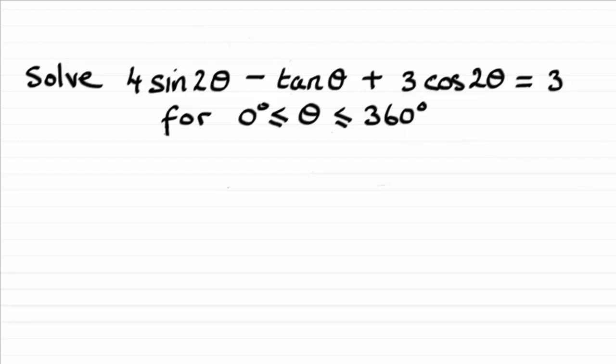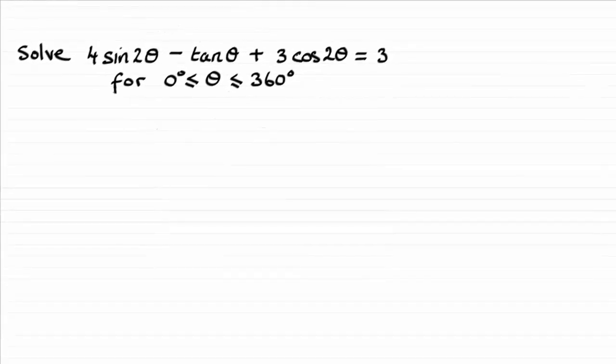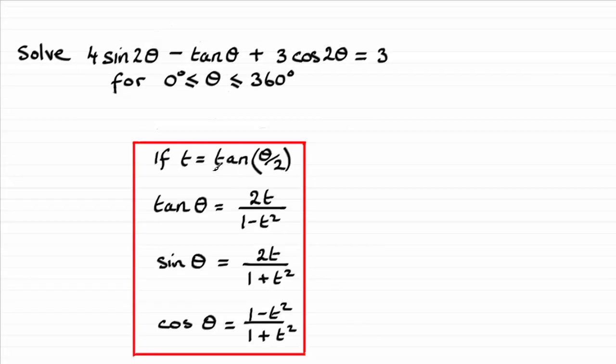Now if you watched the earlier videos in this series I showed you that we could let t equal tan θ upon 2, and we derive these expressions for tan θ, sine θ, and cosine θ in terms of t. And by substituting these values into the equation, solving for t, we could then work backwards and work out what the angle θ was.